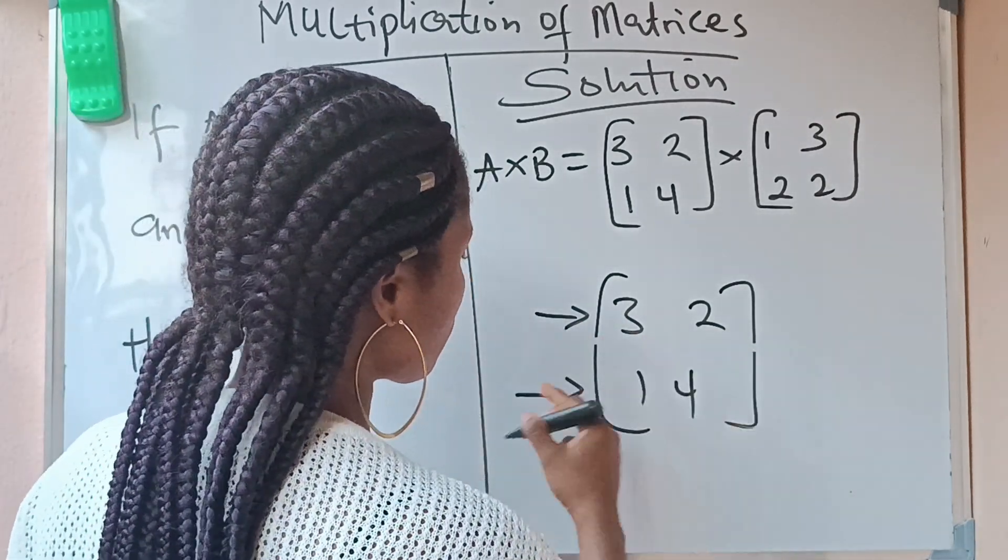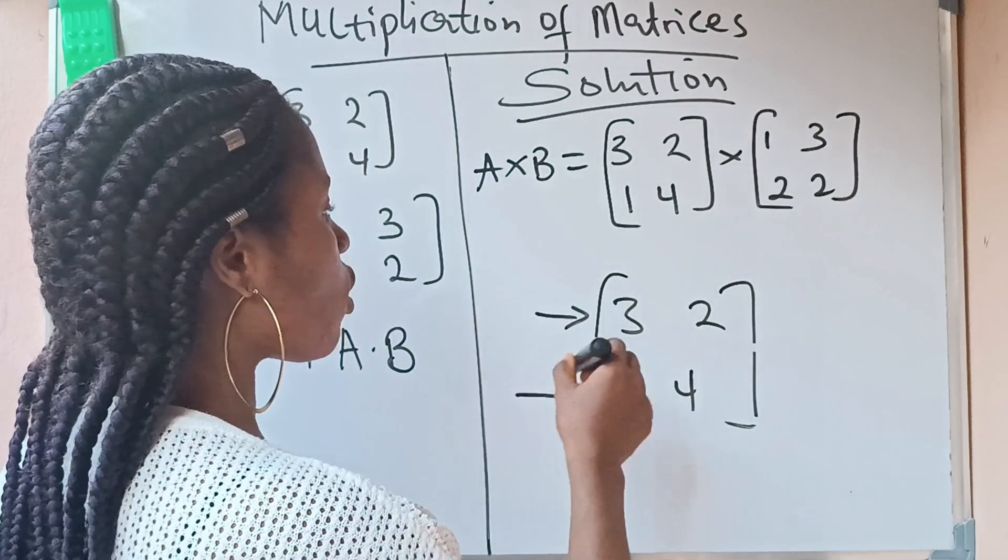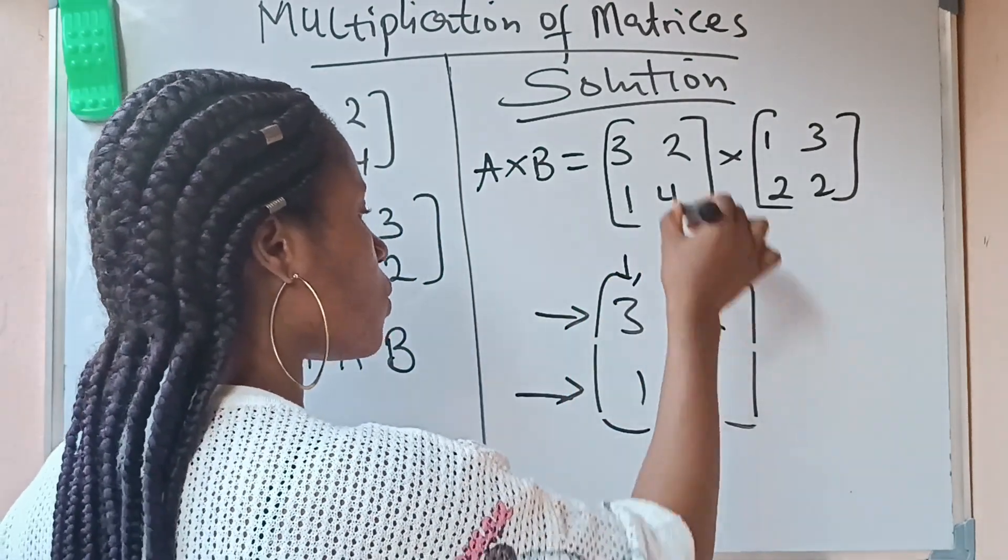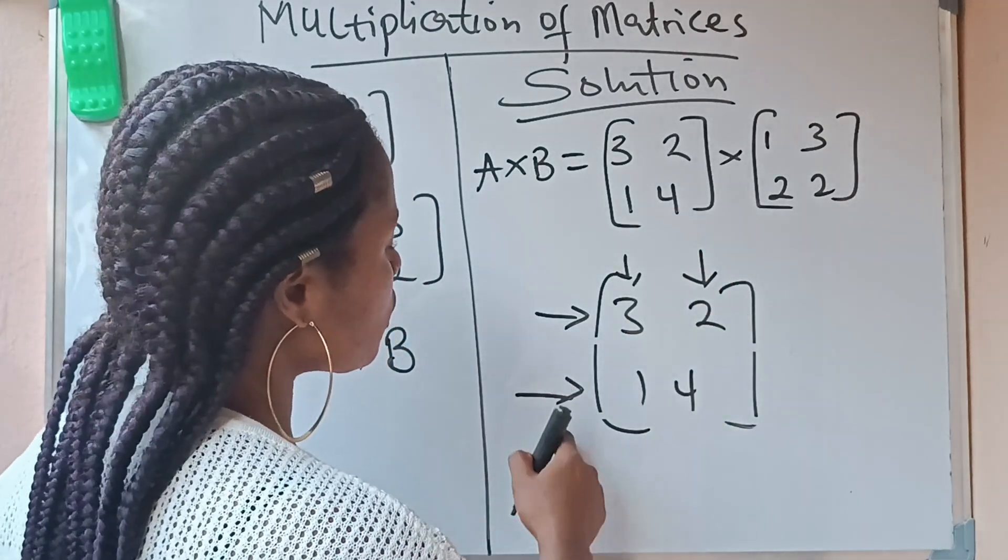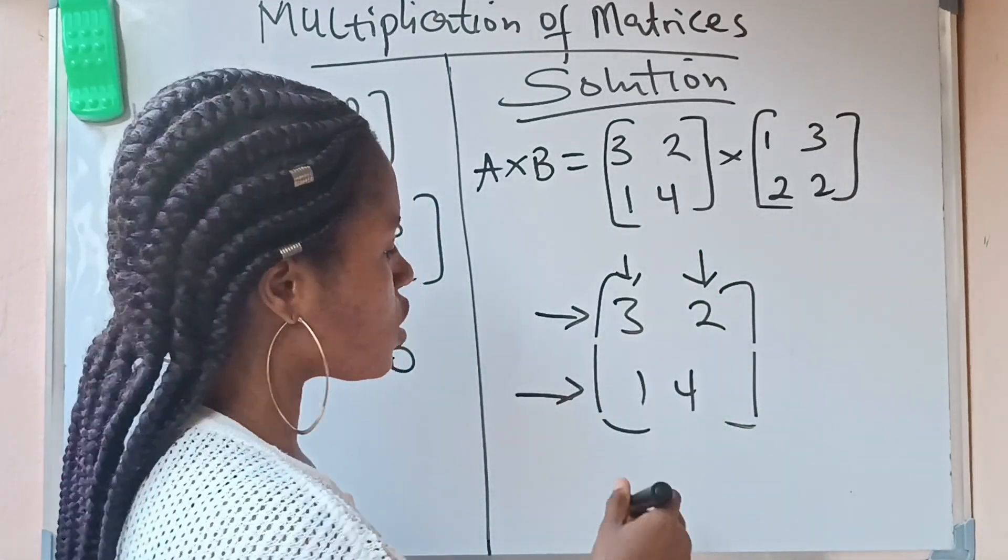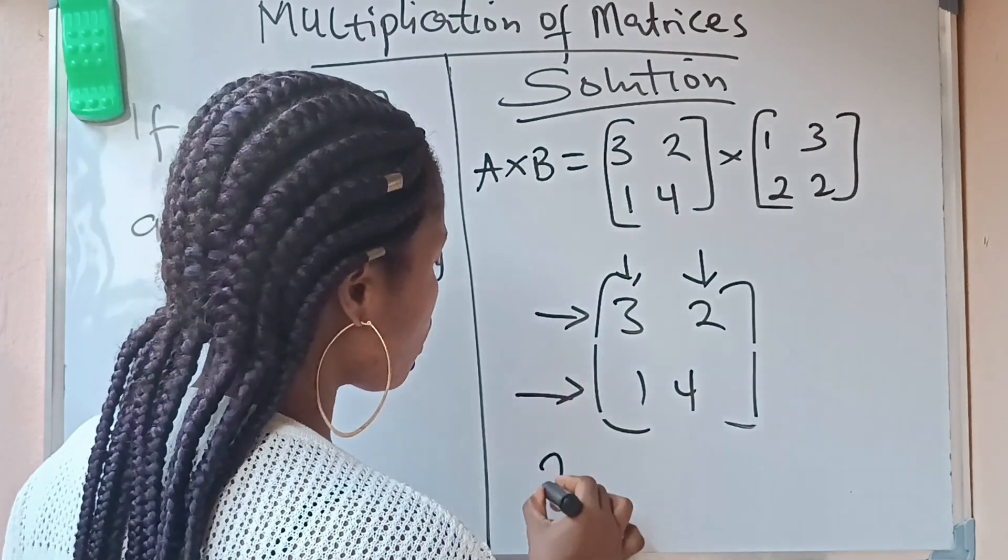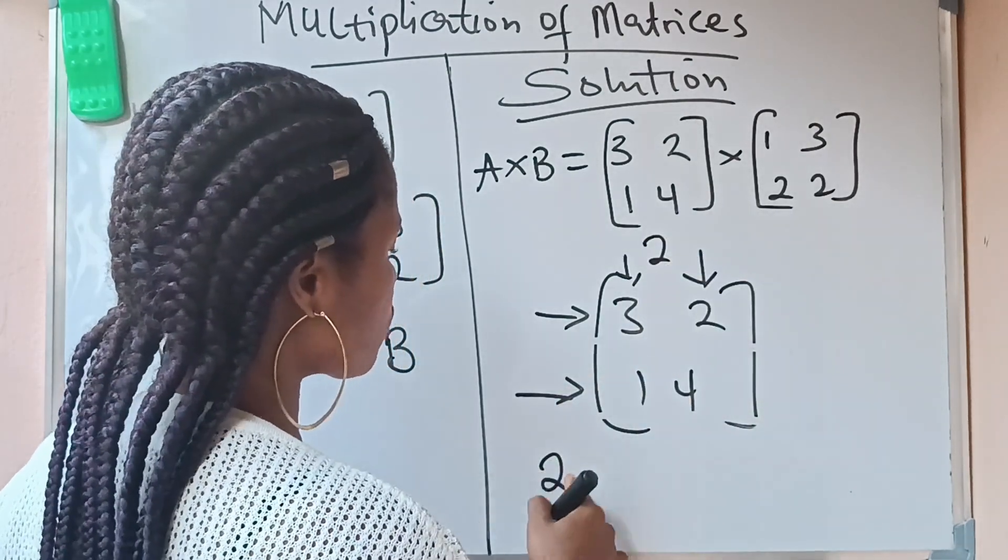The column means the ones that are vertical—they are the columns. So this is a column and this is a column. This is a 2×2 matrix because the row is 2 and the column is 2. When you're asked to multiply two matrices together, all you need to do is multiply row by column.